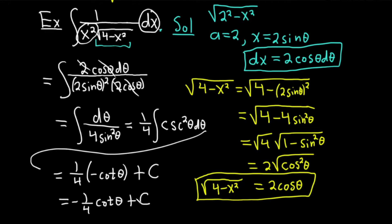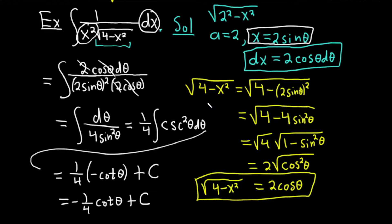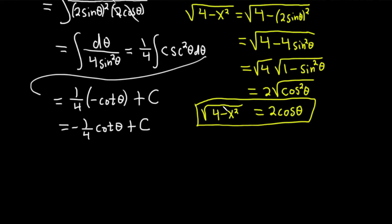You might think we're done, but we're not. Now we're going to use our original substitution, x equals 2 sine theta, and draw a triangle to finish the problem. These problems are really intimidating when you first see them because they're so long — it's probably the longest thing you've done up until this point in mathematics. But once you do one of these on your own, you feel really accomplished.